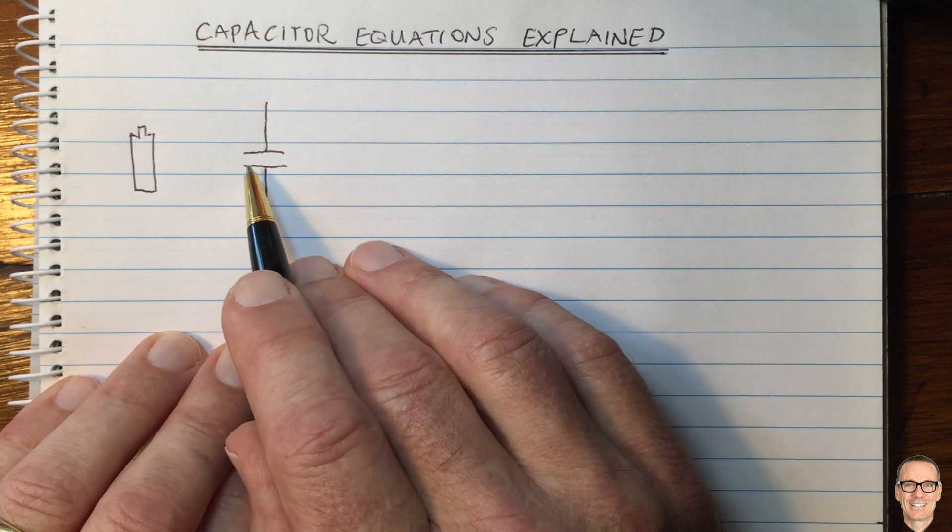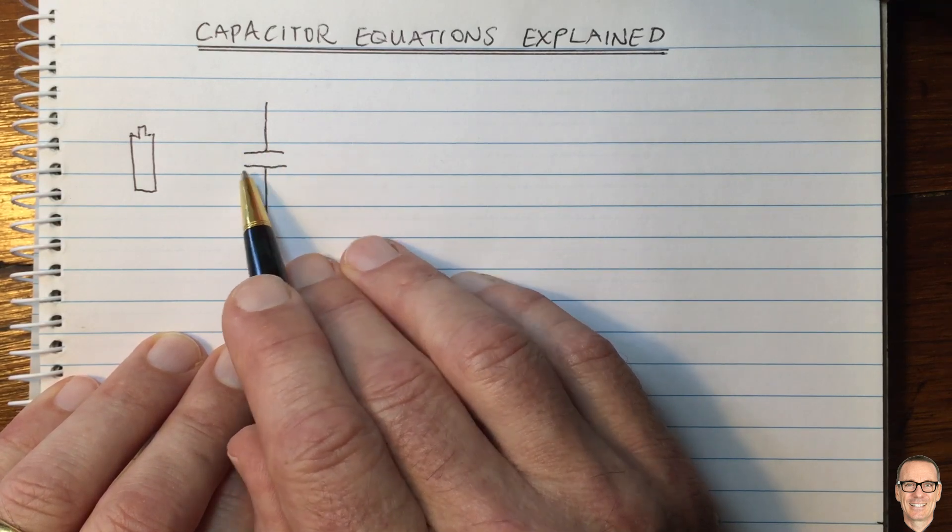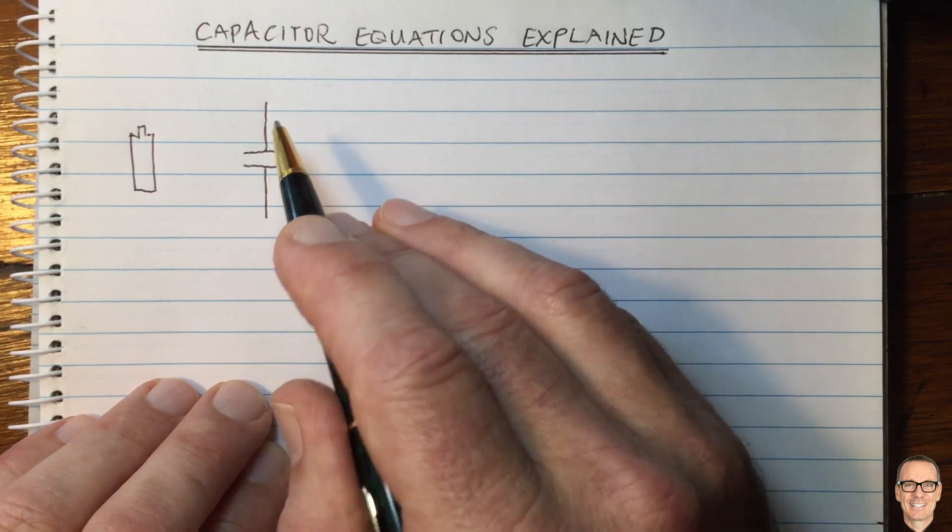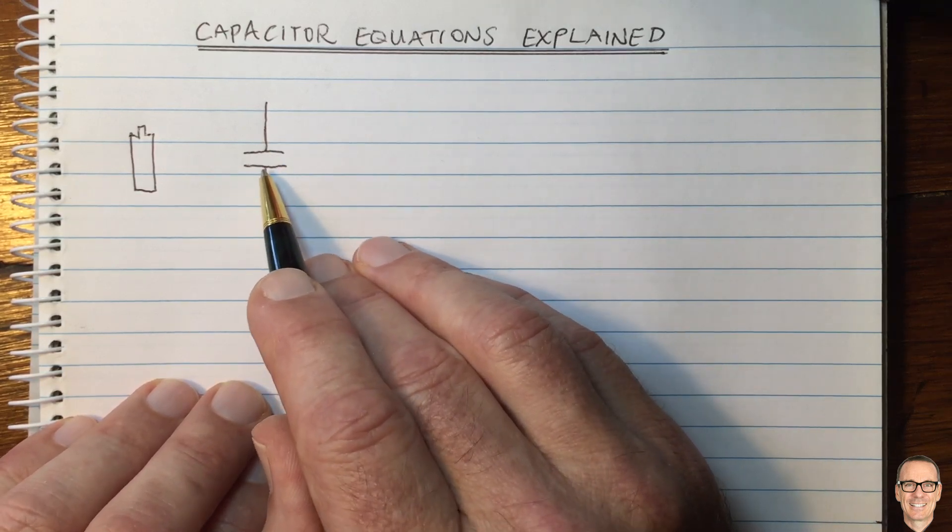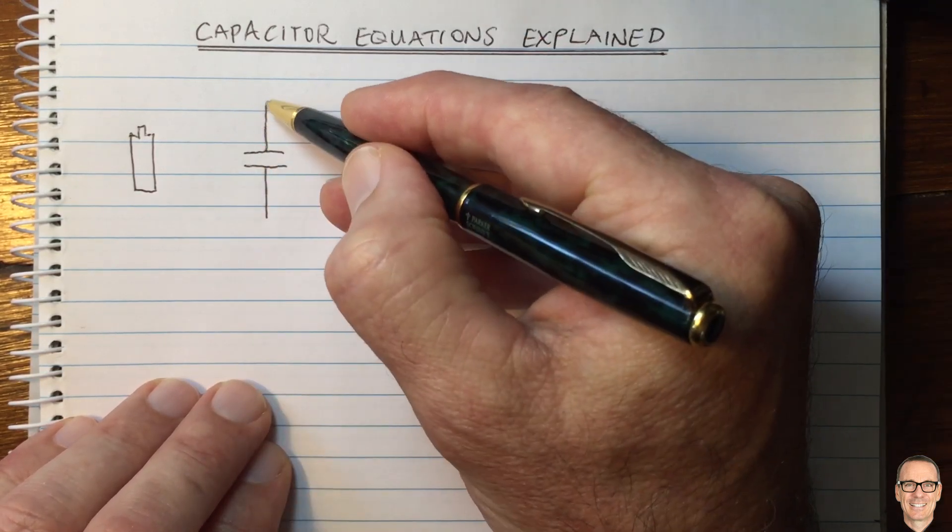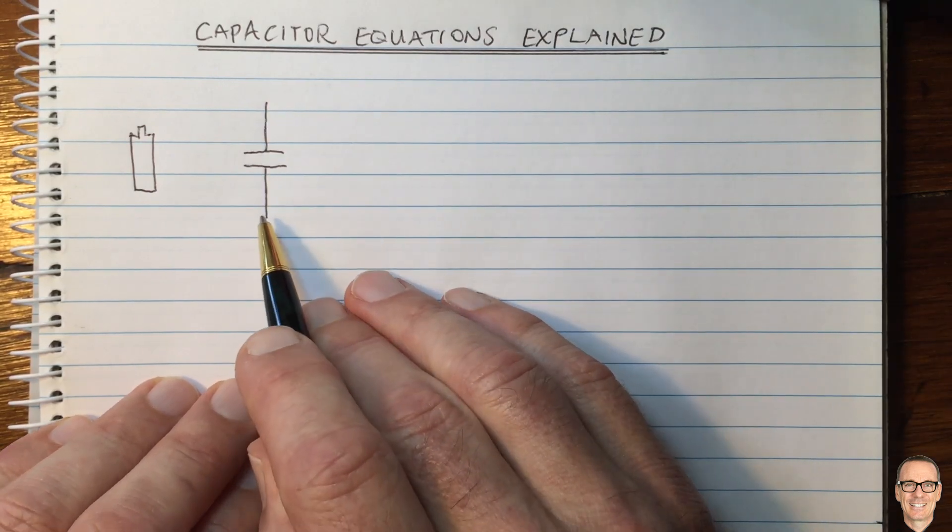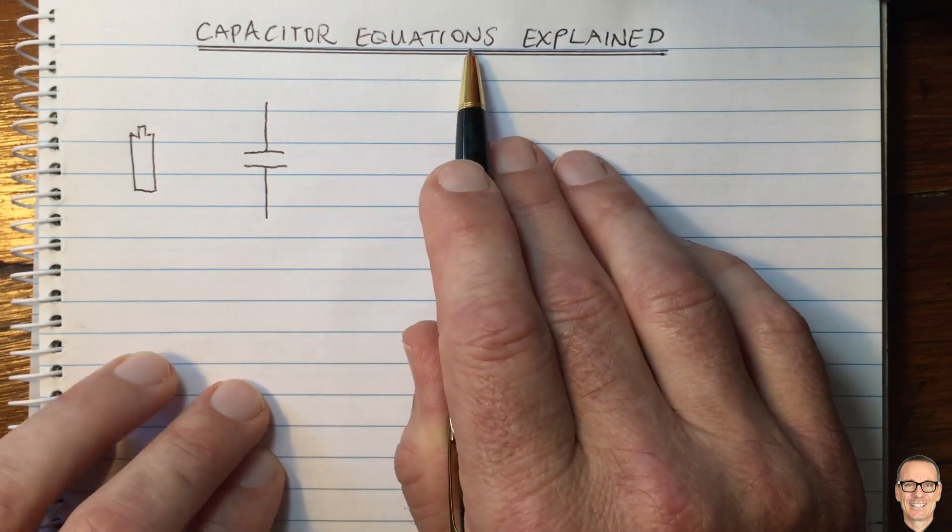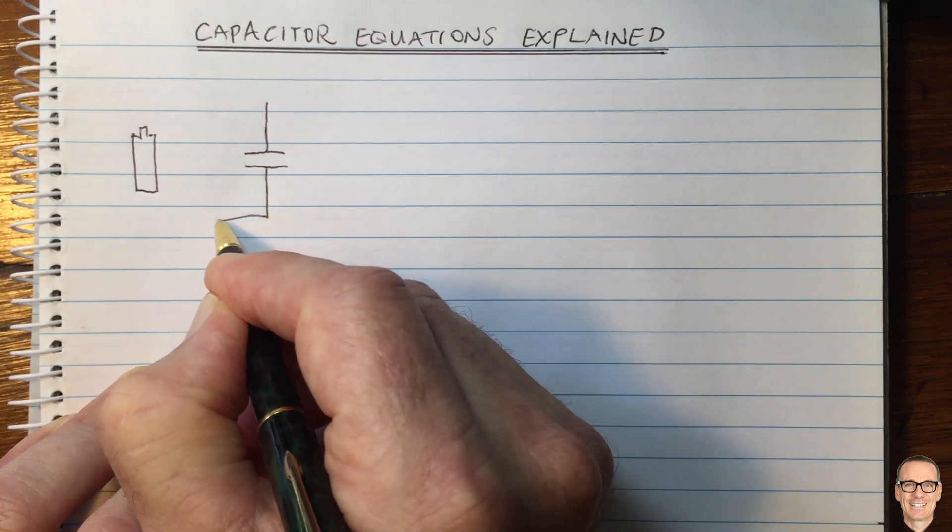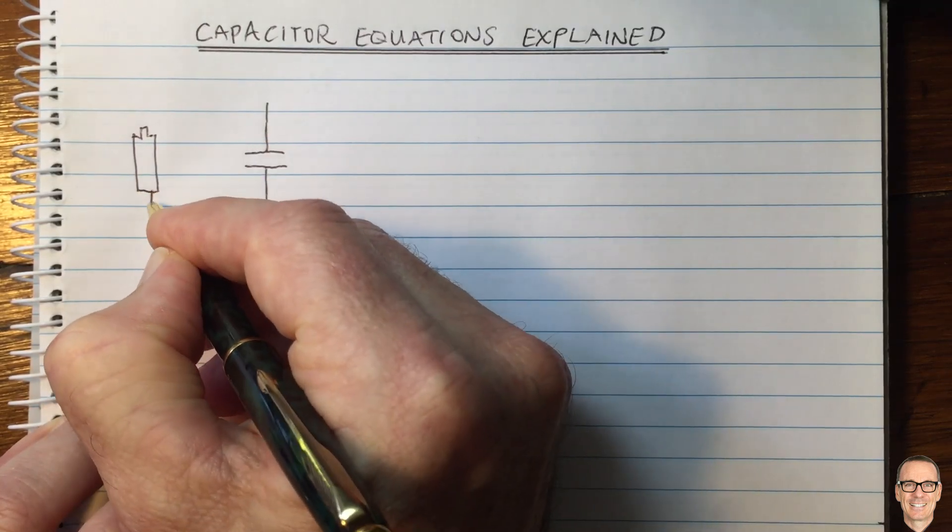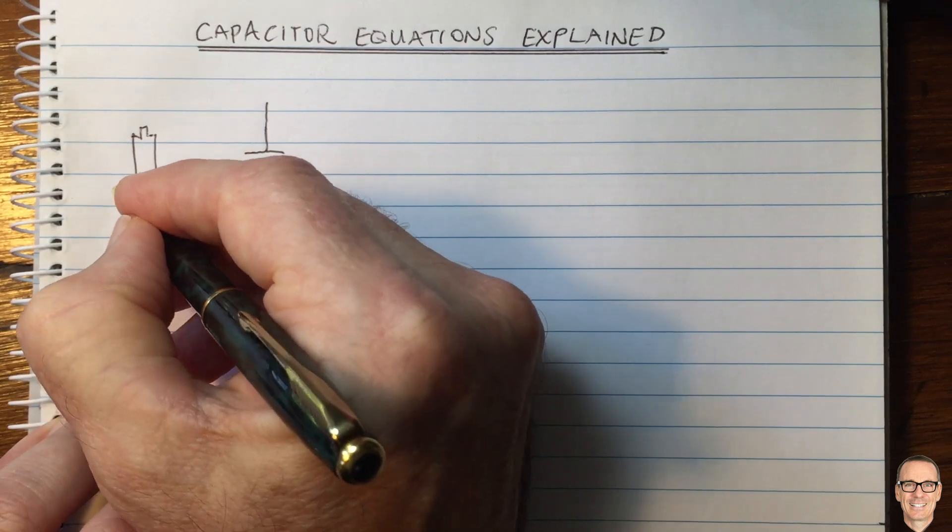A capacitor is formed by having parallel metal plates. I've drawn those two here in this diagram, and we're going to have wires that connect those plates to other parts of a circuit. To understand the equations, I'm going to start by connecting one of those plates to the negative terminal of a battery.